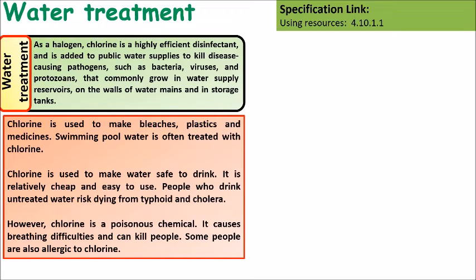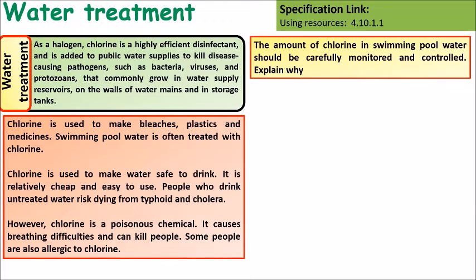Chlorine is used to make bleaches, plastics and medicines. Swimming pool water is often treated with chlorine. Chlorine is used to make water safe to drink — it is relatively cheap and easy to use. People who drink untreated water risk dying from typhoid and cholera. However, chlorine is a poisonous gas that causes breathing difficulties and can kill people. Some people are also allergic to chlorine. The amount of chlorine in swimming pool water should be carefully monitored and controlled.